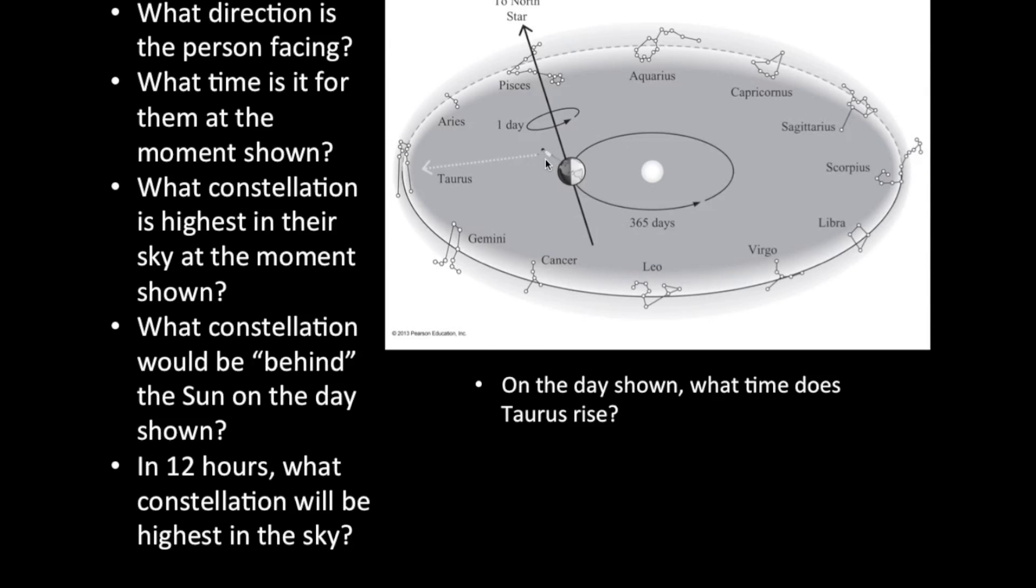So on this particular day, where Taurus gets high up above the southern horizon at midnight, a question we can ask ourselves is, what time does Taurus rise? Well, it's highest in the sky at midnight, and we assume for constellations, like the zodiacal constellations, that they spend about 12 hours above the horizon.